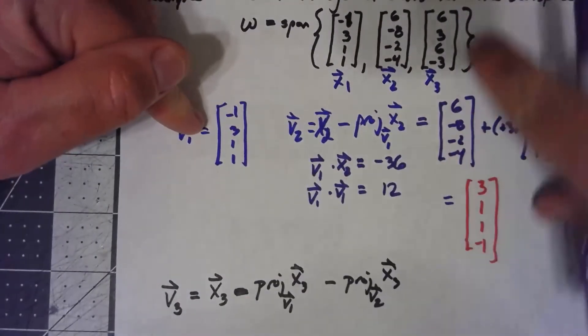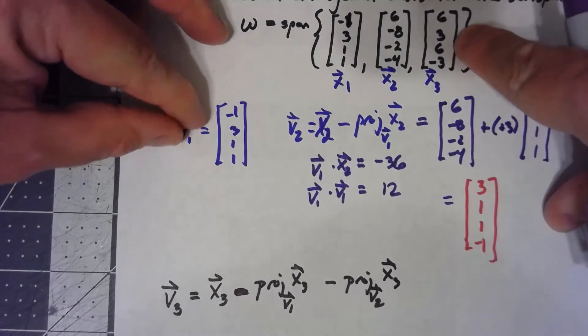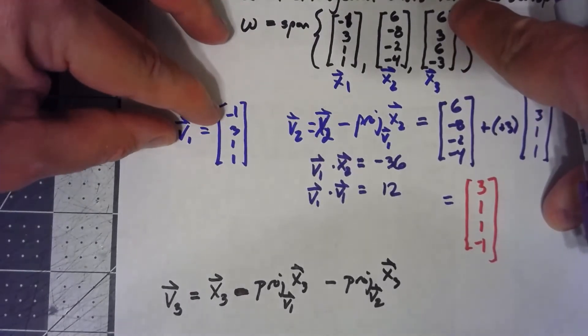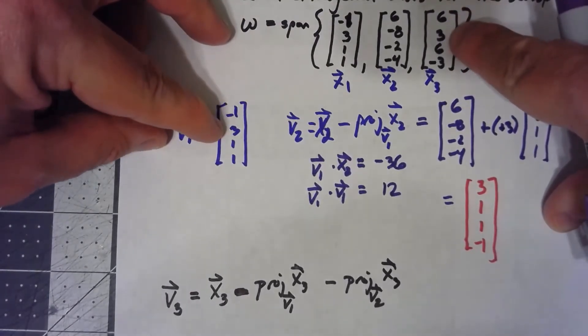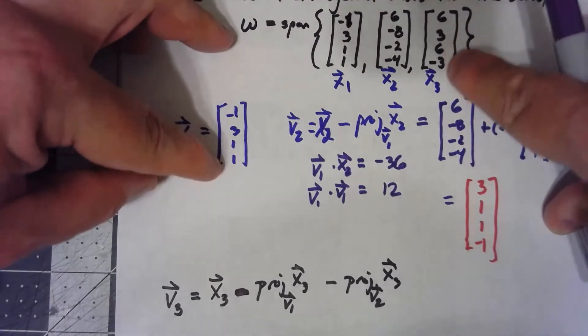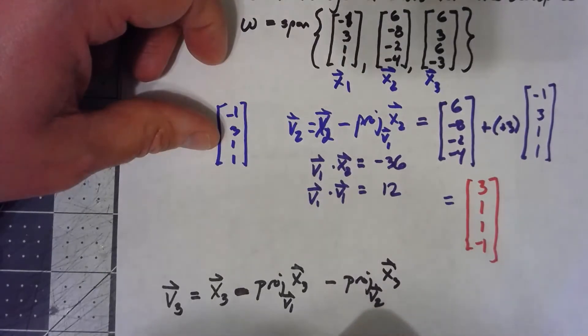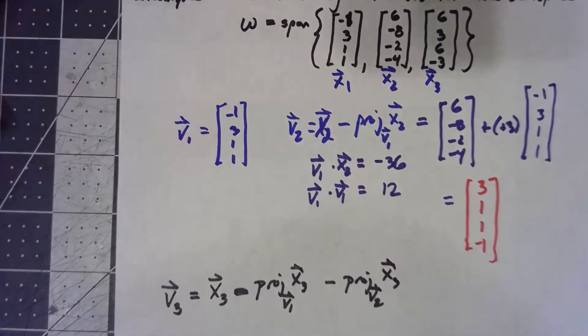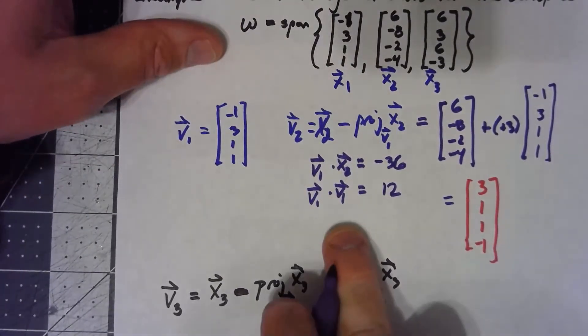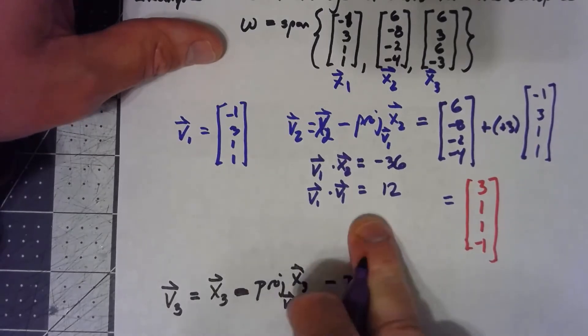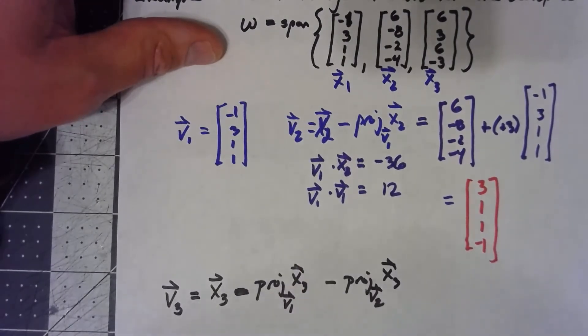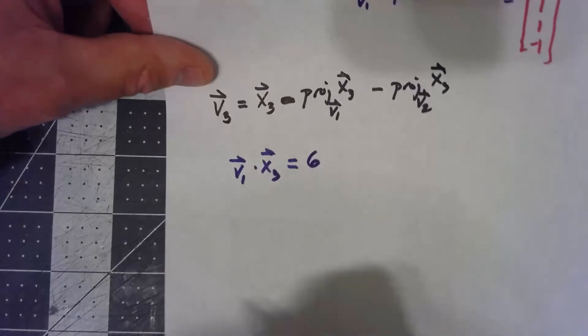That is, I'm taking this vector dotted with this vector. That's negative 6, plus 9 is 3, plus 6 is 9, minus 3 is 6. And that's over v1 dot v1, but we already figured that out. So that's just 12.